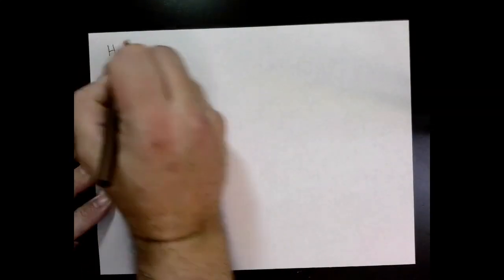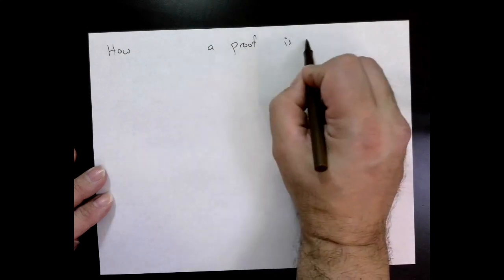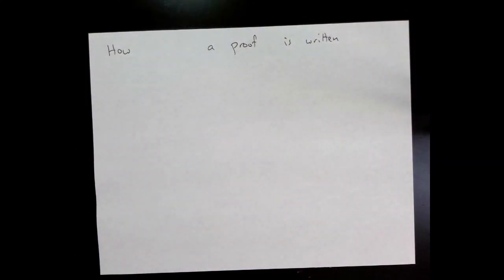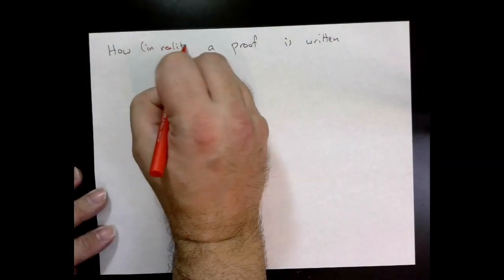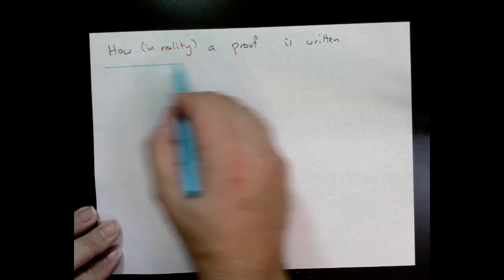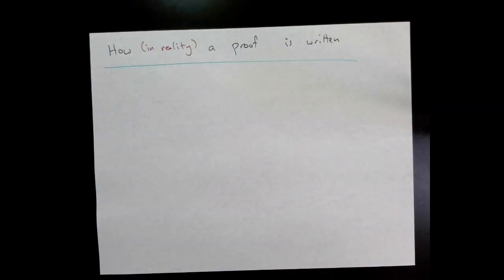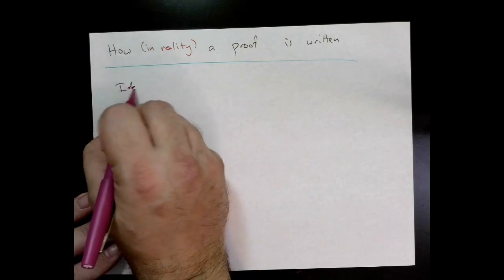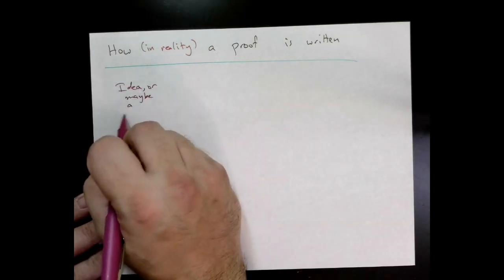Here in reality is how a proof is written: we come up with some idea or maybe we observe a pattern, and then we make a conjecture. A conjecture is sort of an educated guess; it's like a theory in science. It's a precise statement of something that we think is true and that we'd like to prove.